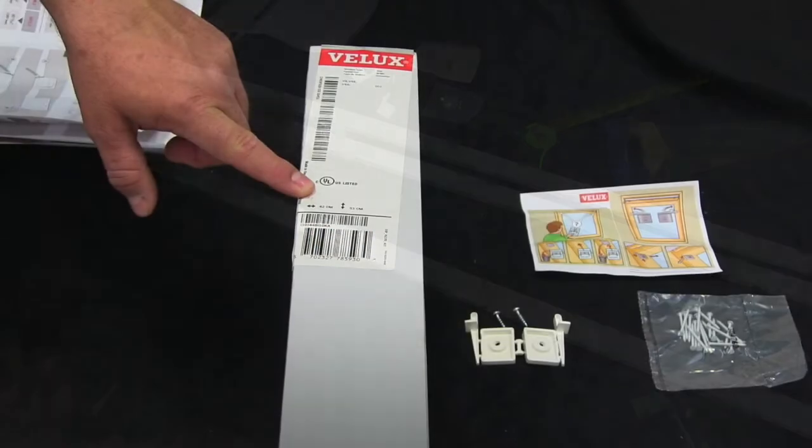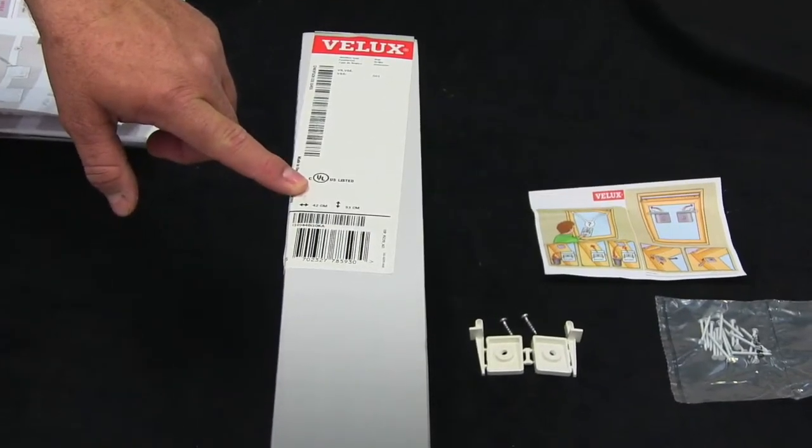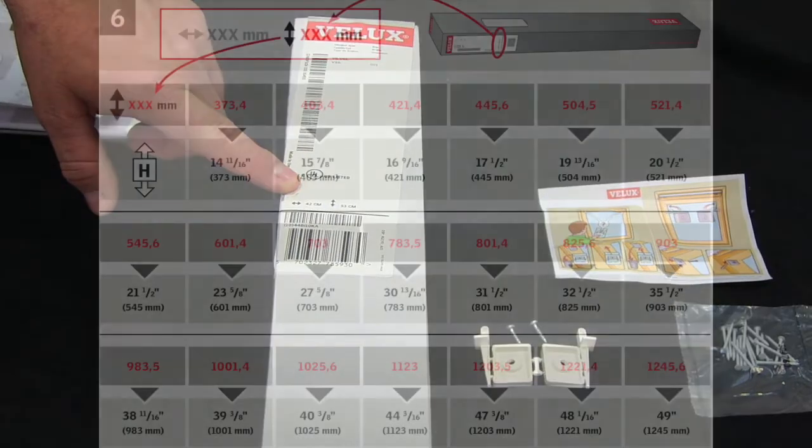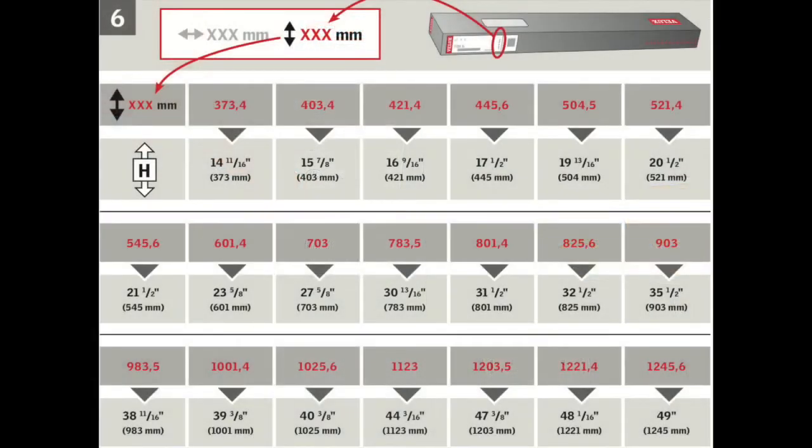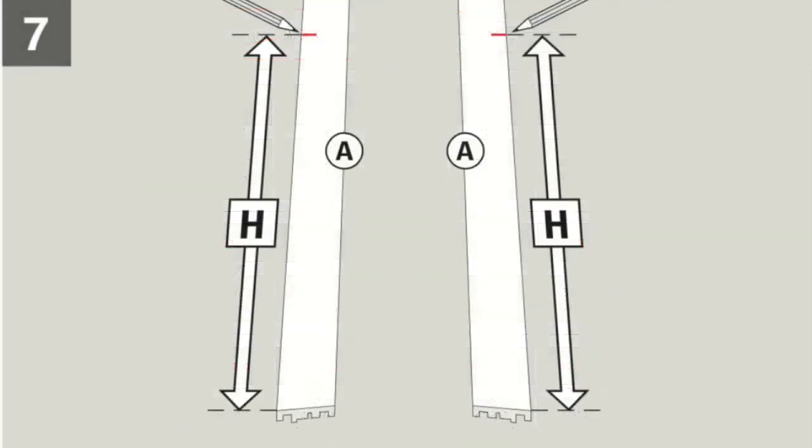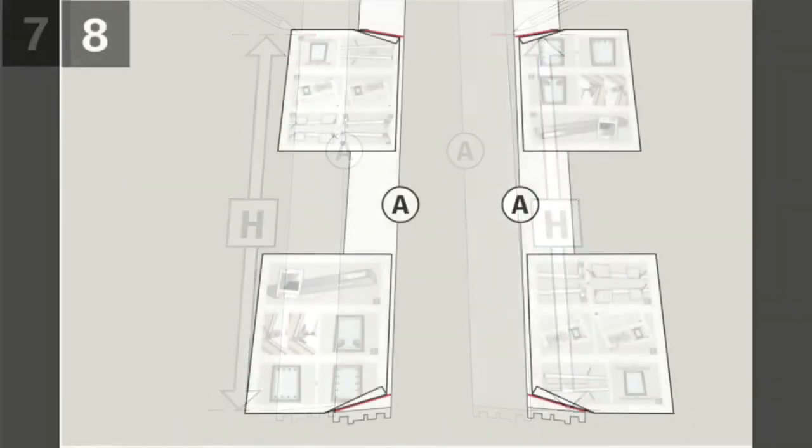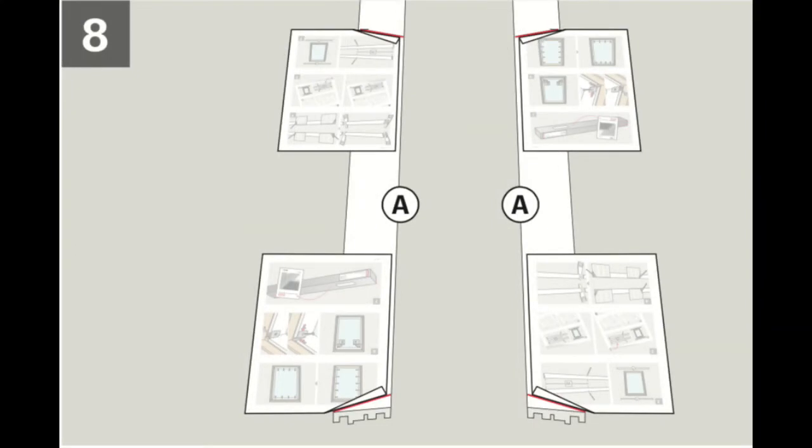Now with the two remaining A trim pieces, you will refer back to the blind packaging for the height in millimeters to be cross-referenced with the height chart in the instructions. You can now repeat the same process for the remaining A trim pieces and cut them to the appropriate length.